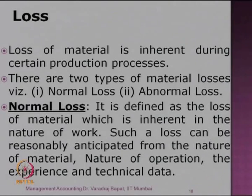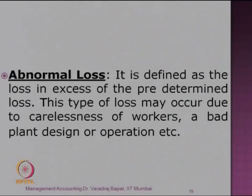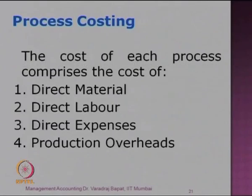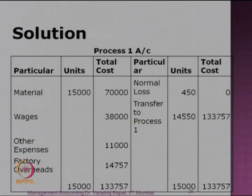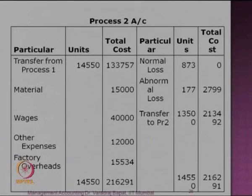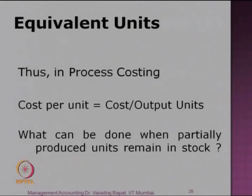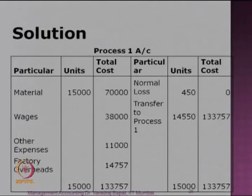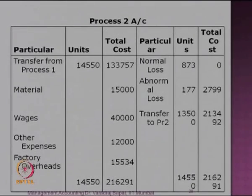When loss is inherent to the process as per technical specification, it is considered normal. When actual losses exceed the normal loss, that is called abnormal loss — usually caused by accident or some irregularity. We have seen how process cost accounts are prepared. Now let us go to the Excel sheet and do some more cases on process costing.